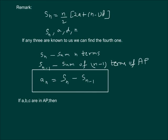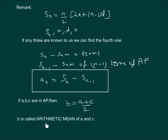Lastly, we have an important result: if a, b, c are in arithmetic progression, then b can be written as (a plus c) divided by 2, and b is called the arithmetic mean of a and c. The concept of arithmetic mean is also very important for further studies.